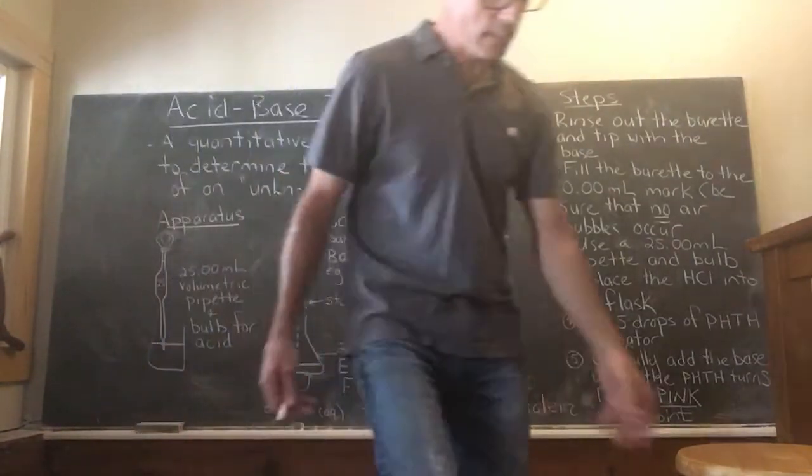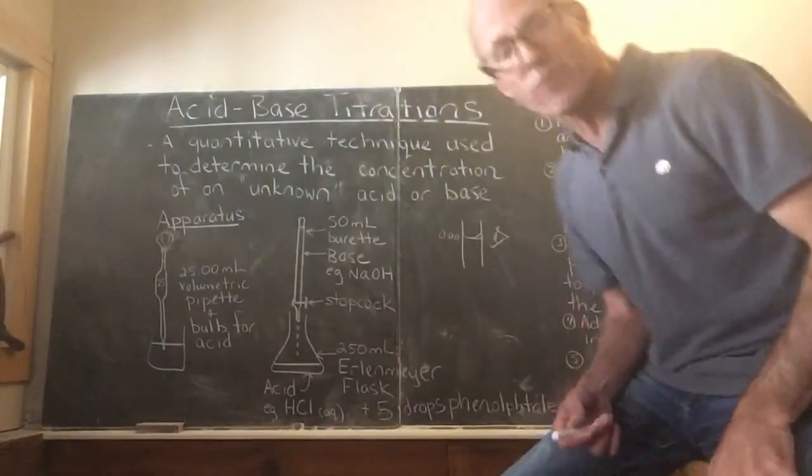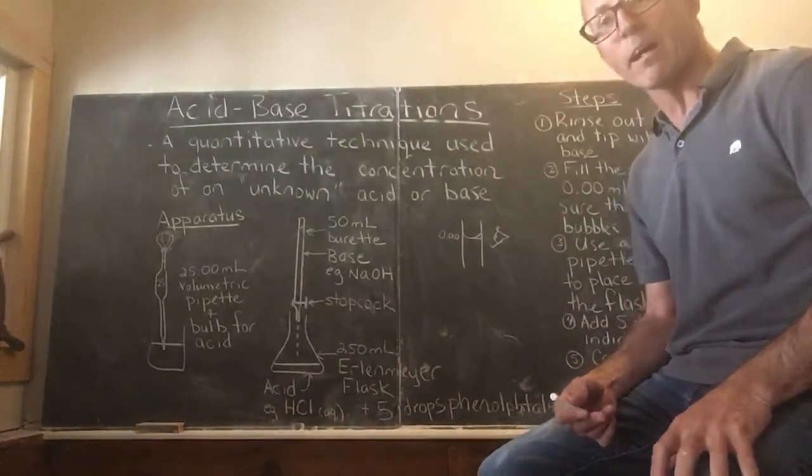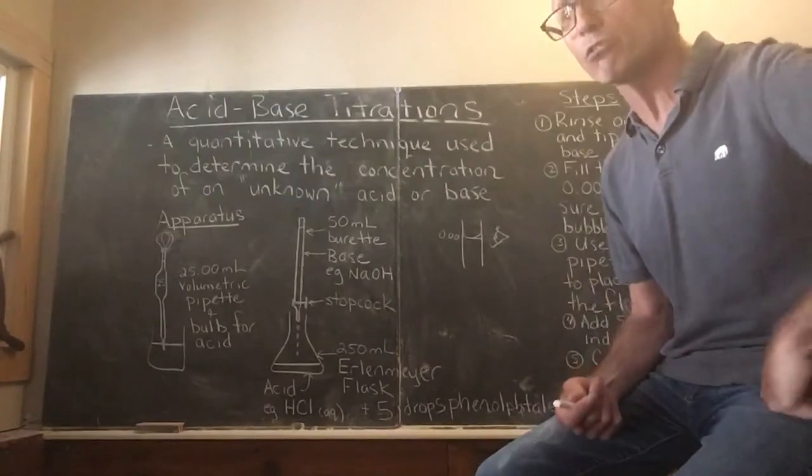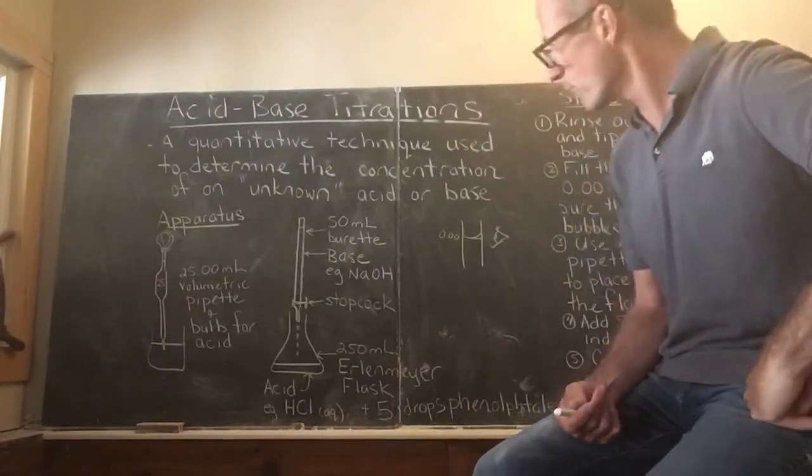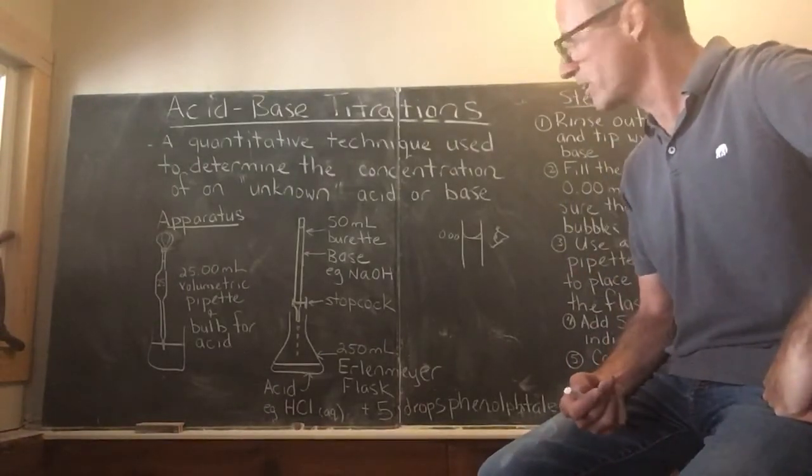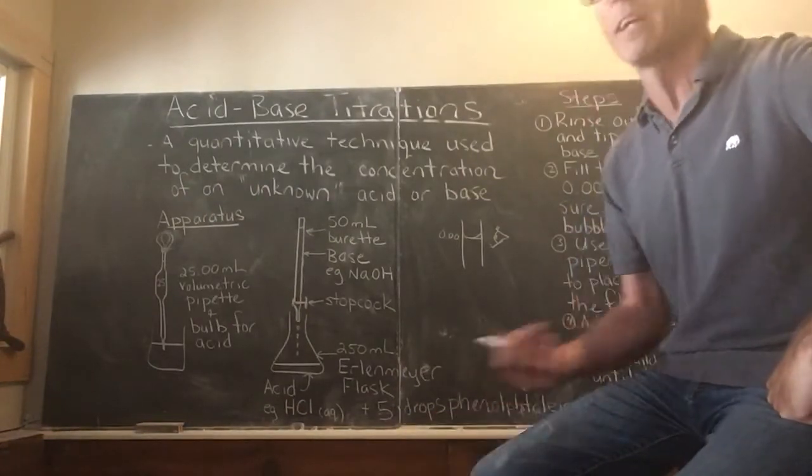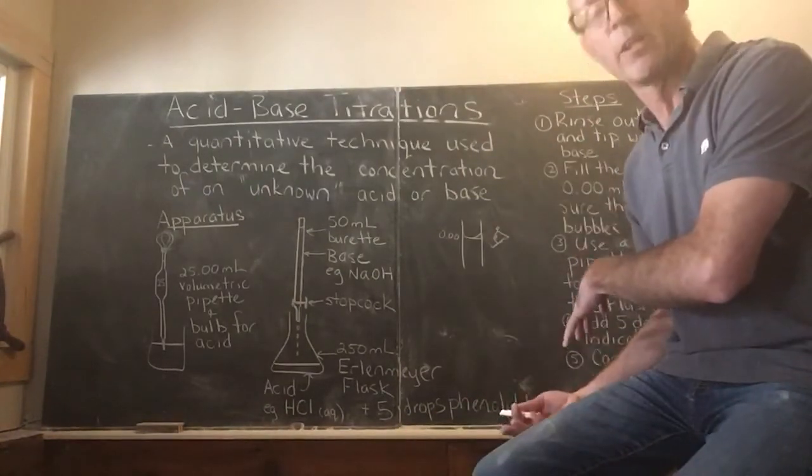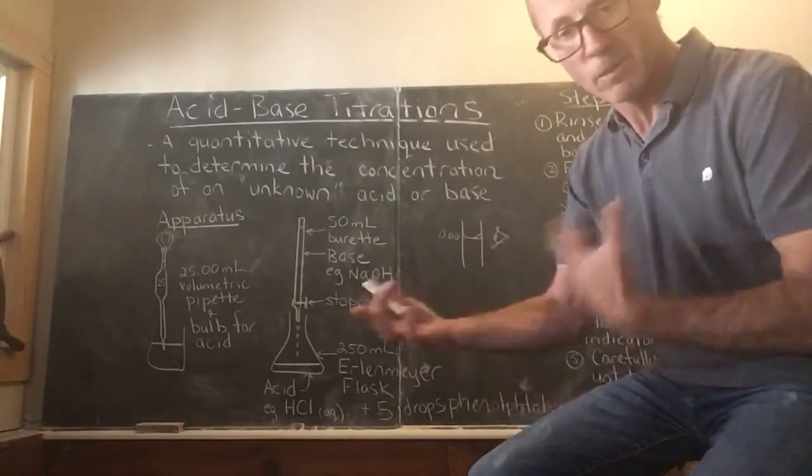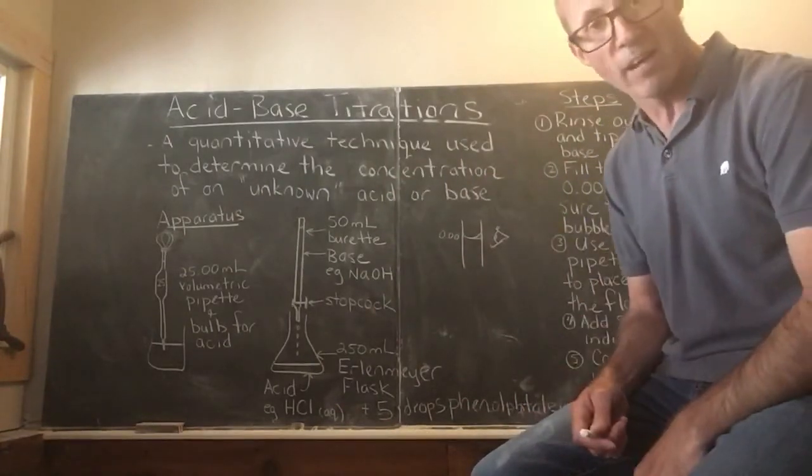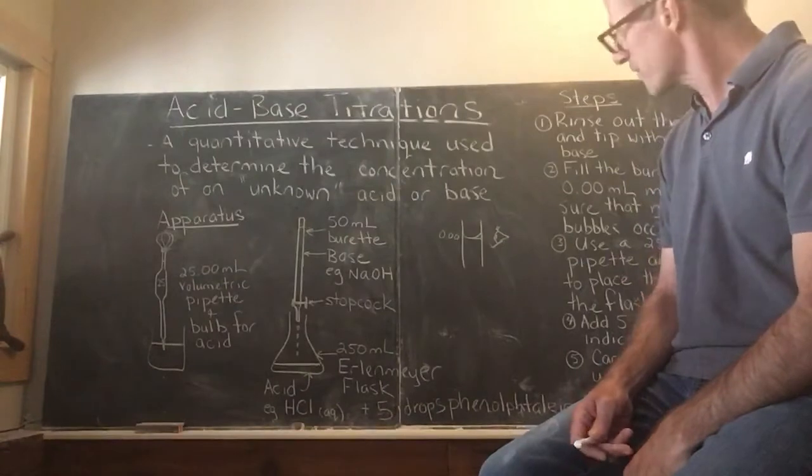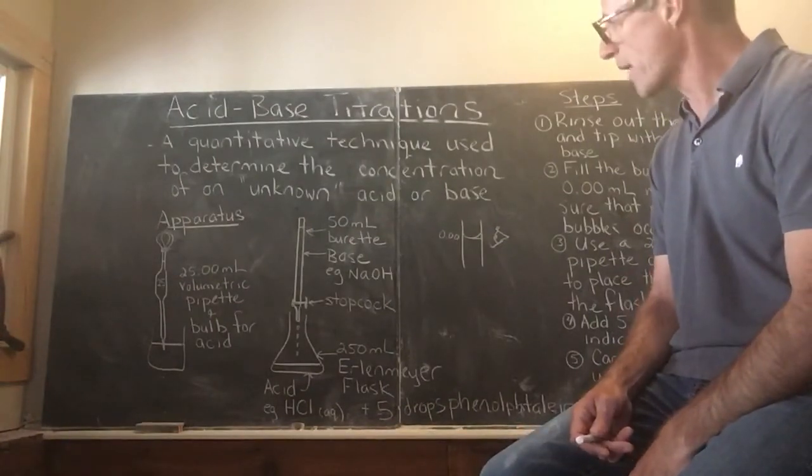From there we can do our mathematics to determine which concentration was unknown. So we have to know the concentration and volume of either the acid or the base, and know the volume of the other but not the concentration. We can't have two unknowns - we've got to have one. Our next step is to actually look at the mathematics using some data that we would obtain in a lab much like this one.